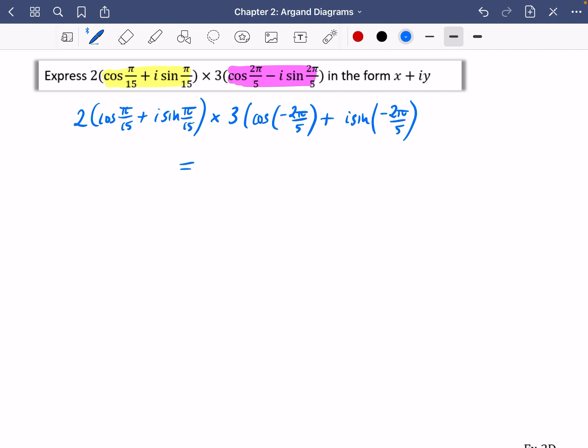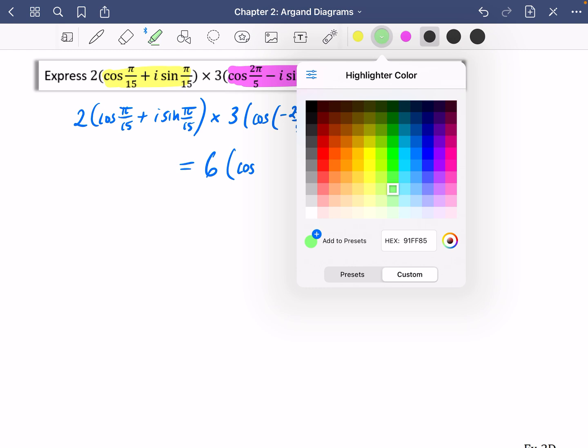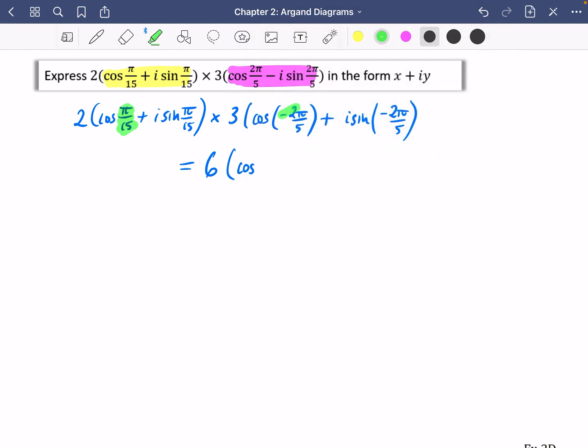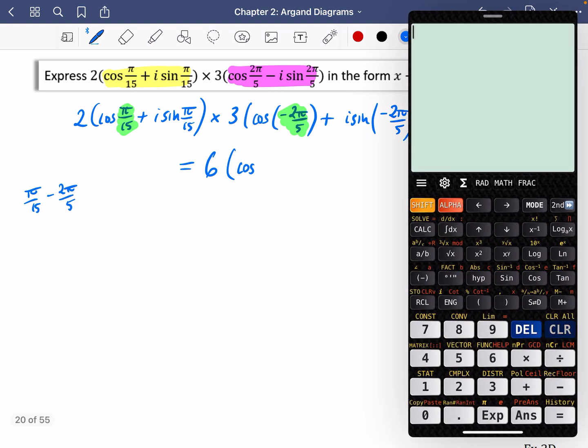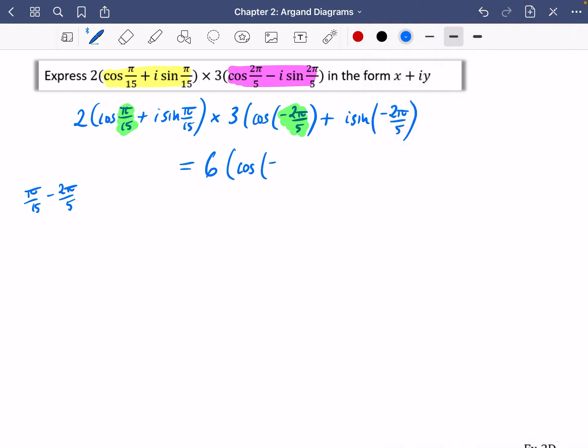So pretty obviously here, the modulus is going to be 6 because of 2 times 3. And then I'm going to have cos of this one here. We're going to have the pi over 15 plus the minus 2 pi over 5. So I'm going to do my pi over 15 and I'm going to add on minus 2 pi over 5. In other words, it's going to be a subtract. So let's just quickly do that. I don't like typing pi. It takes me too long. So I'm going to do 1 over 15 minus 2 over 5, which is minus a third. So it is cos of minus pi over 3 plus i sine of minus pi over 3. Obviously, it'll be the same for cos and sine because we're doing the same arguments.